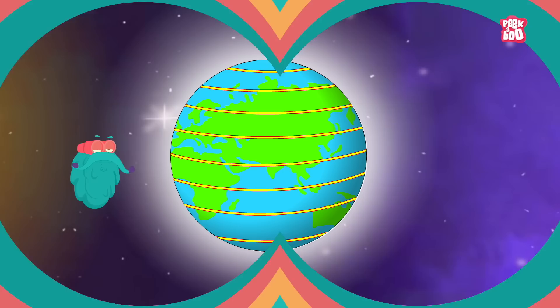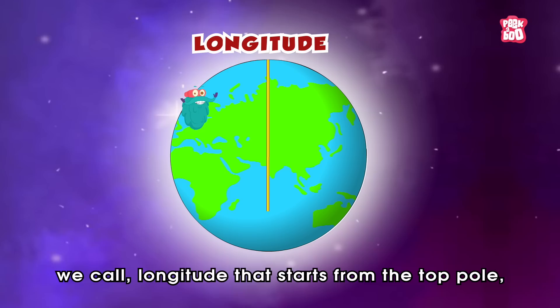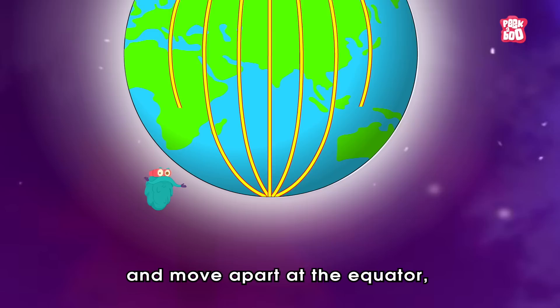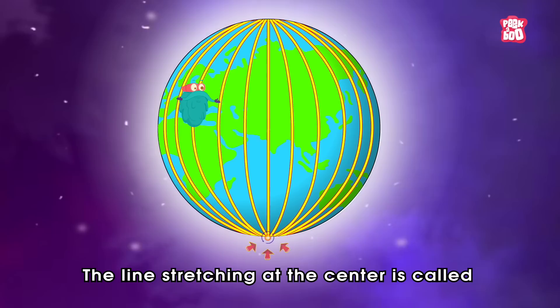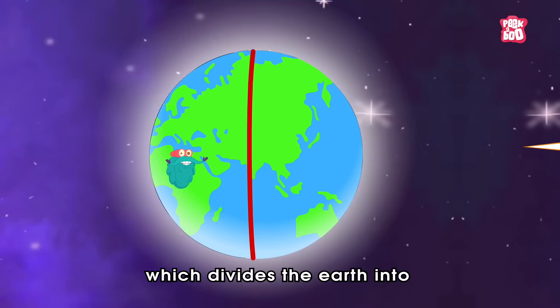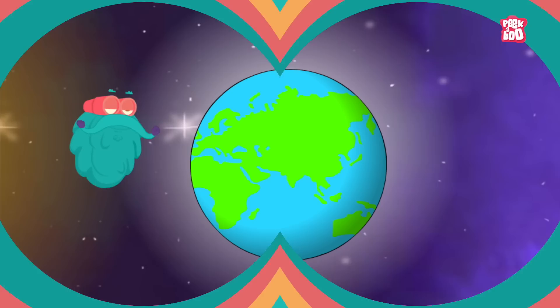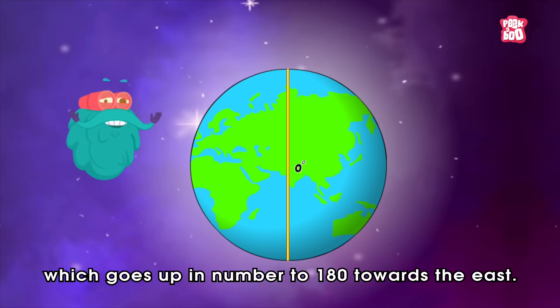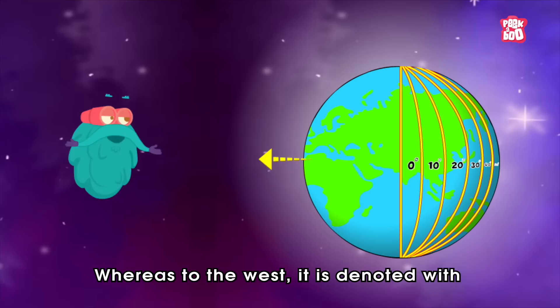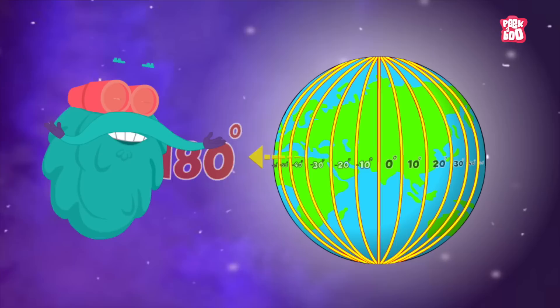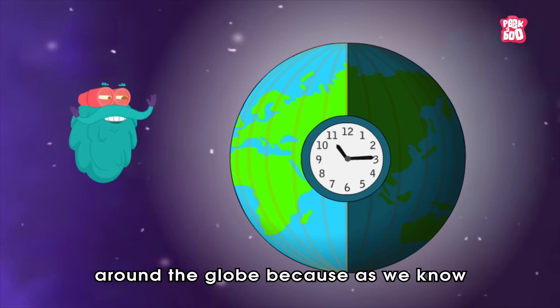Now let's look at other imaginary lines we call longitude, that start from the top pole, move apart at the equator, and meet again at the bottom pole. The line stretching at the center is called the Prime Meridian, which divides the Earth into western and eastern hemispheres. Like the equator, this line is marked at zero degrees, going up to 180 degrees towards the east, whereas to the west it is denoted with negative numbers down to minus 180 degrees.